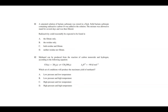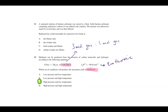Question 12: methanol can be produced from the reaction of carbon monoxide and hydrogen. Which set of conditions will produce the maximum yield of methanol? The reaction is exothermic and there are three moles of gas on the reactant side versus one mole on the product side. High pressure favors the side with the least moles of gas, and low temperature favors the exothermic side, so the answer is high pressure and low temperature.